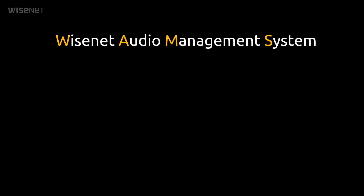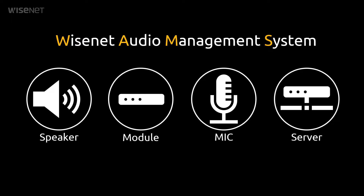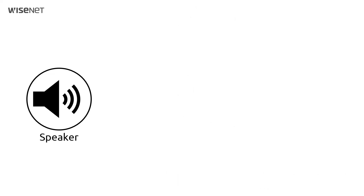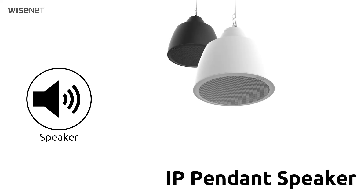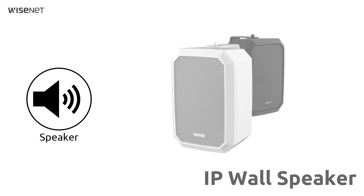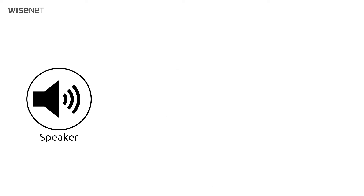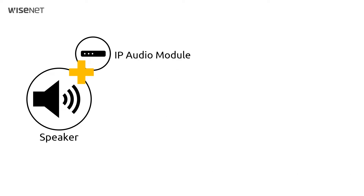VOMS consists of the following components. First, speakers. VOMS supports the following types of speakers: IP Ceiling Speaker, which can be mounted in the ceiling; IP Pendant Speaker, which can be hung as an interior; IP Wall Speaker; and IP Horn Speaker for outdoor installation. All are embedding the IP Audio modules, and the IP Audio module is powered by PoE or PoE+.